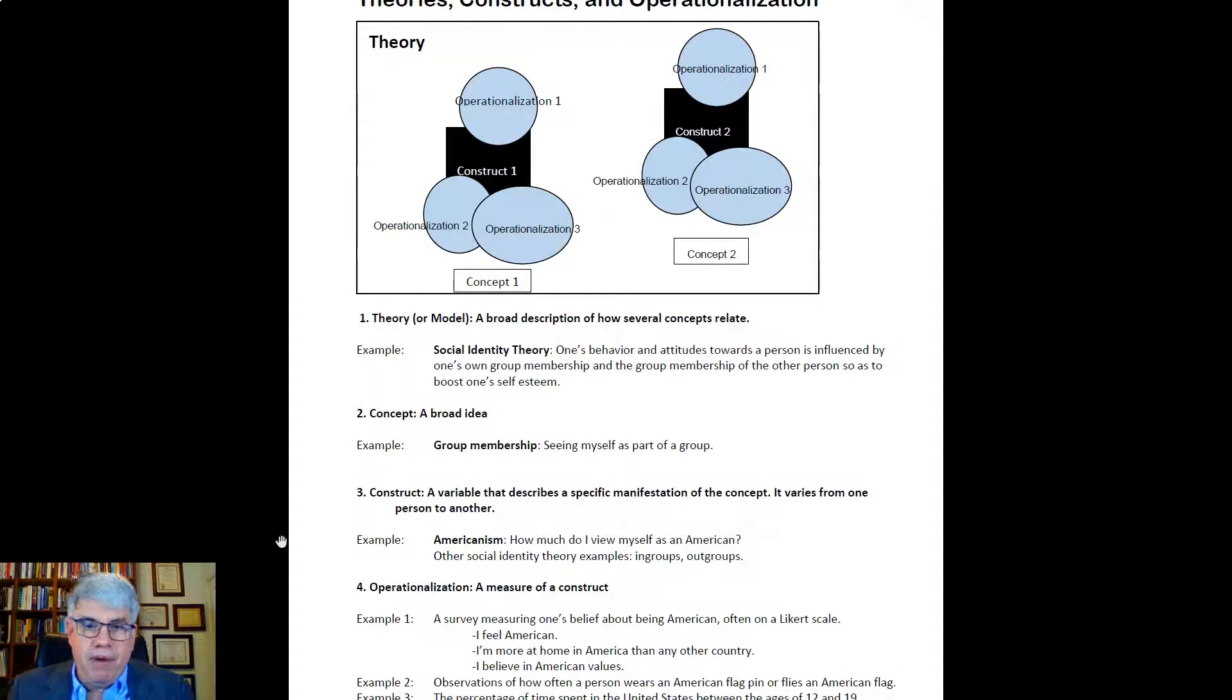Let's choose the example of Americanism. How much do I view myself as an American? That's a specific thing that can be measured by a construct. And by a construct, we mean this Americanism, there's going to be a set of behaviors that go together with Americanism. Like maybe I have American flags on my clothes or in my house, or maybe when I look for a job, the first place where I look for a job is in America. Or maybe I have an American passport. There's all kinds of things and behaviors and characteristics that would be associated with Americanism.